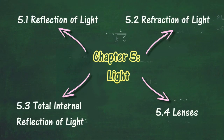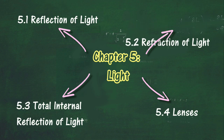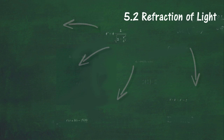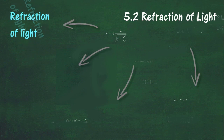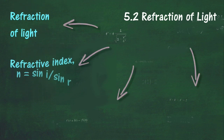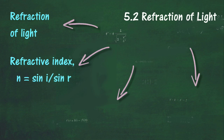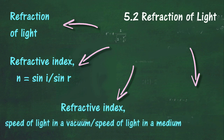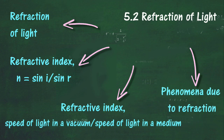In Section 5.2, we will learn about Refraction of Light. At the end of this section, you should be able to: explain refraction of light, define refractive index as n = sin i / sin r, determine the refractive index of a glass or perspex block, state the refractive index as n = speed of light in a vacuum over speed of light in a medium, describe phenomena due to refraction, and solve problems involving the refraction of light.